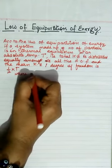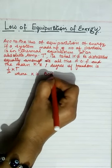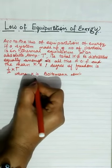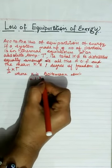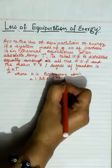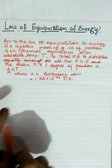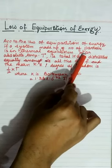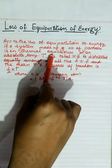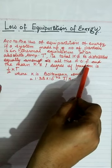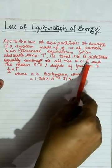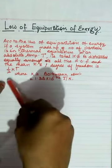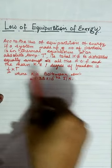Here, K is the Boltzmann constant, and its value is 1.38 × 10⁻²³ Joule per Kelvin. The law of equipartition of energy means that if we have a system made of many particles in thermal equilibrium at temperature T, the total kinetic energy is distributed across all degrees of freedom, and the mean kinetic energy per degree of freedom is half KT.